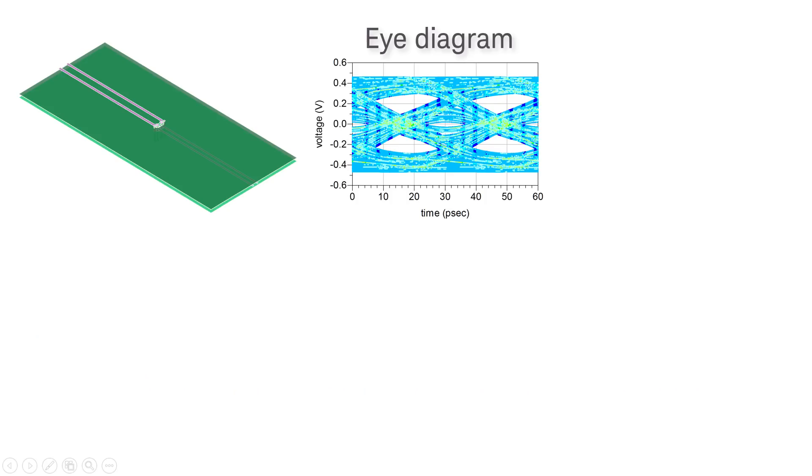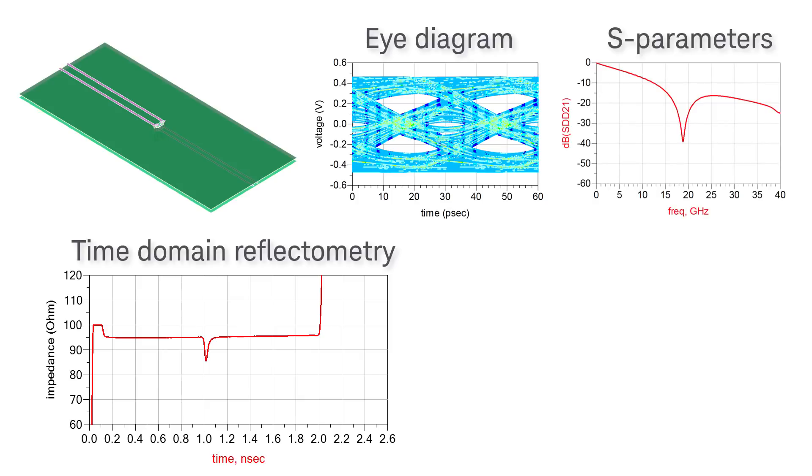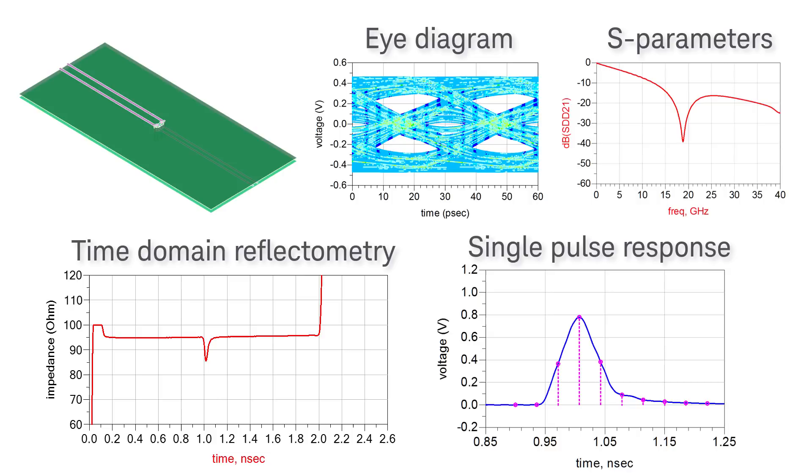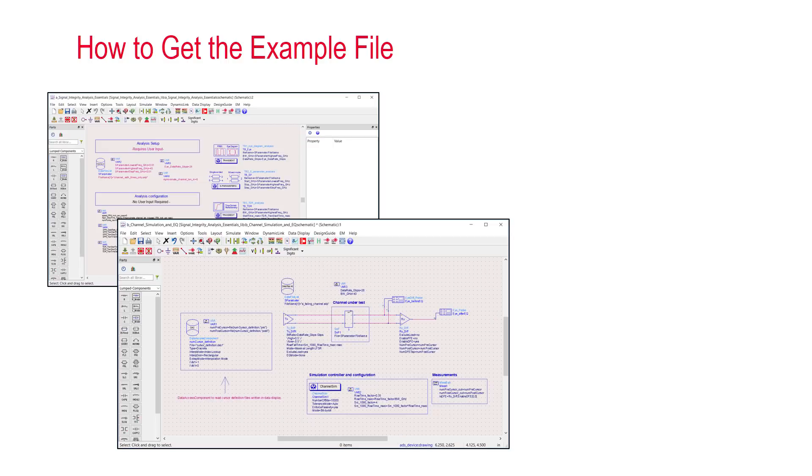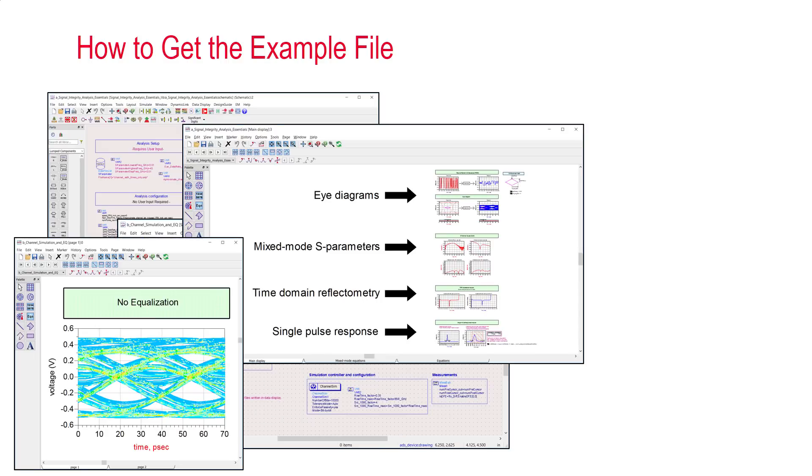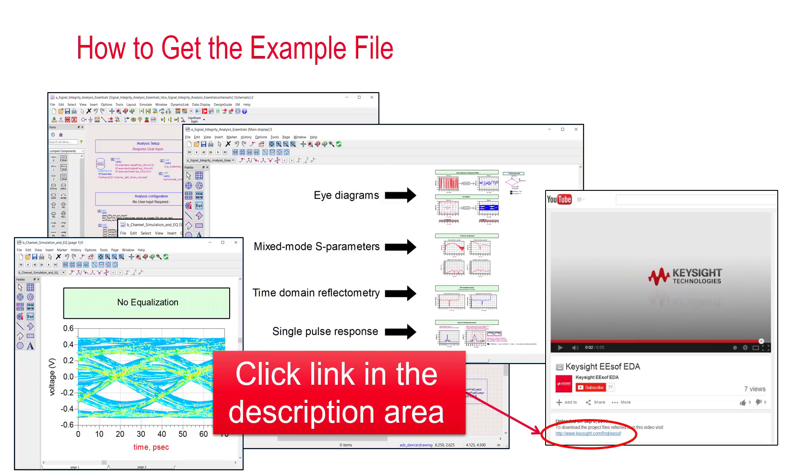In summary, we simulated the channel and saw the closed eye. Using mixed mode S parameters and TDR, we identified and confirmed the root cause of degradation. Finally, we look at the single pulse response to select the number of pre- and post-cursors to include in our equalization setup. Of course, there is a lot more detail about the analysis that I can cover here, but I've included it in an ADS workspace which you can download. Get a head start on your signal integrity journey by using the workspace.